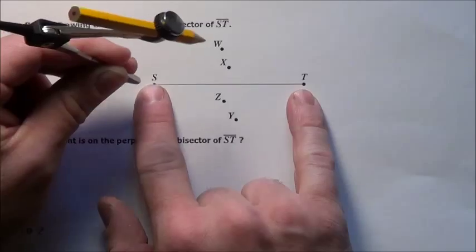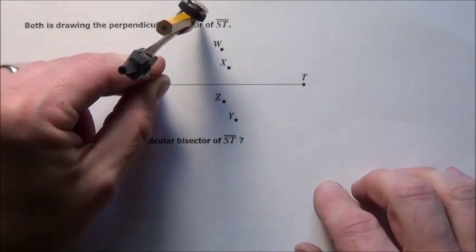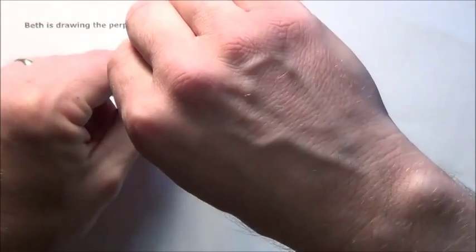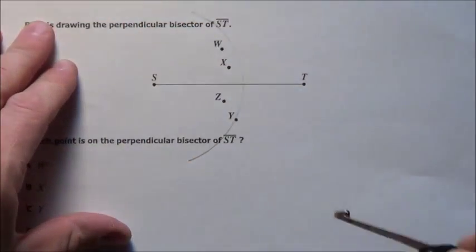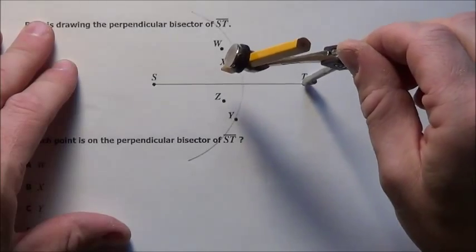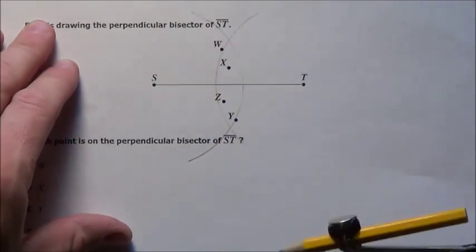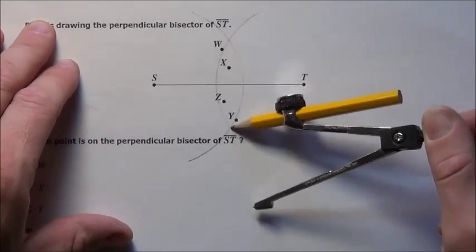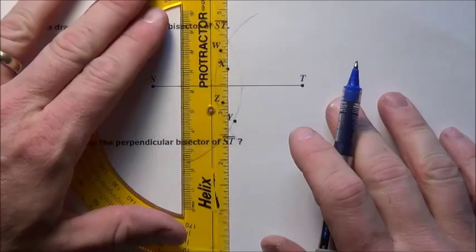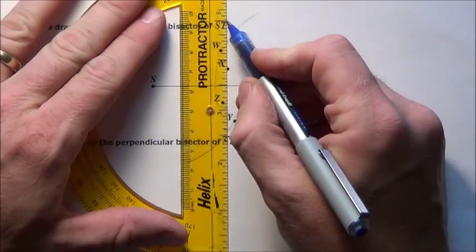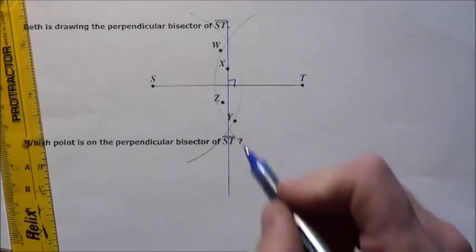Whenever I have two points, I know that I'm just going to be sticking the compass on the points. So I'm going to go ahead and stick it on S, make an arc there, then stick it on T and make an arc. Notice that that's going to form a nice intersection there — and there's the perpendicular bisector of it.